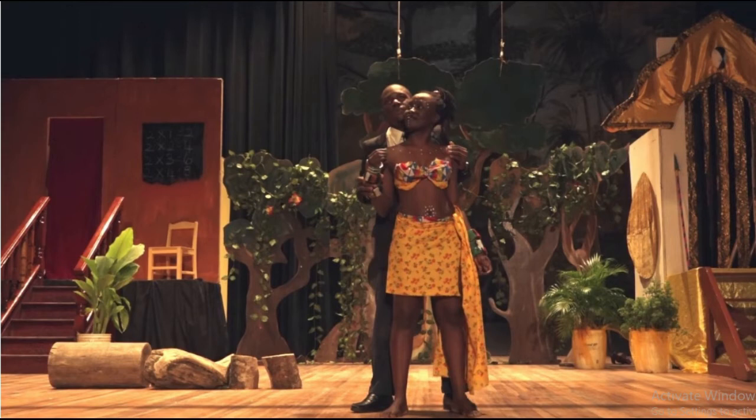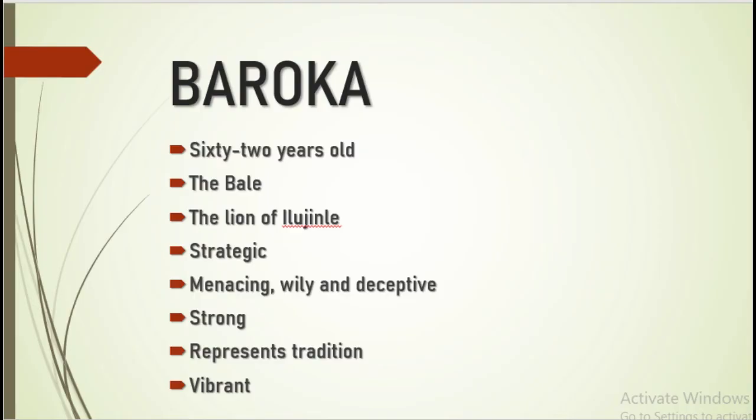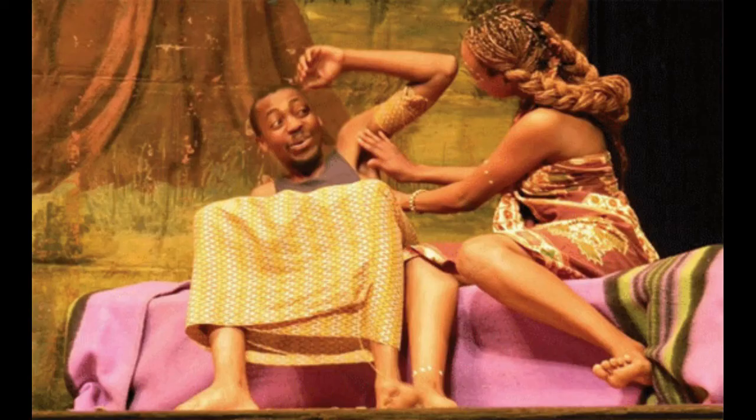In the same act, we get introduced to Lakunle's foil, the 62-year-old Baruka. Baruka is the natural counterpoint of Lakunle in terms of age, appearance, philosophy, beliefs and personal principles.